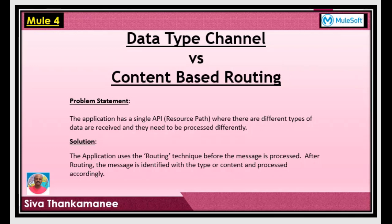There are differences between data type channel and content based routing. Data type channel tries to identify the type of processing needed based on the data type of the incoming payload. Content based routing also routes to different processes, but it is based on the actual data content coming in — not the type. So the first one is about data type; the second one is about the data itself.